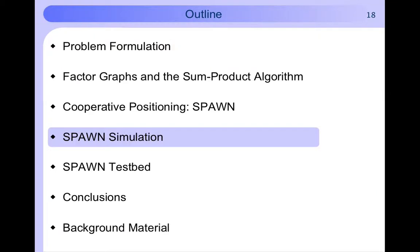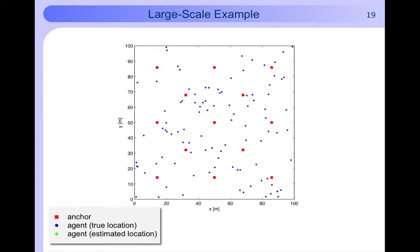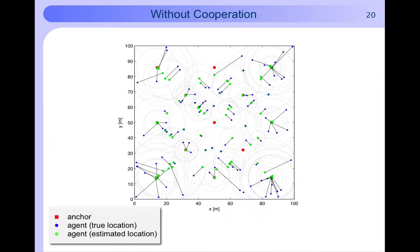We now move on to some simulations. We consider this network in a 100 by 100 meter environment with 100 agents in blue and 13 anchors in red. Every node can communicate and range to devices within 20 meters as shown by this circle.